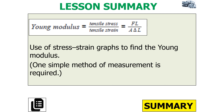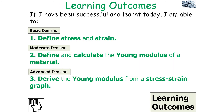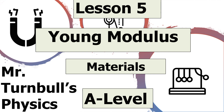To summarise today's lesson: the Young Modulus is tensile stress over tensile strain, which equals F times L over A times delta L. We can use stress-strain graphs to find the Young Modulus. We should now be able to define stress and strain, define and calculate the Young Modulus of a material, and derive the Young Modulus from a stress-strain graph. I hope you've enjoyed today's lesson on the Young Modulus, part of the materials topic in AQA A-Level Physics — thank you for watching and have a lovely day.